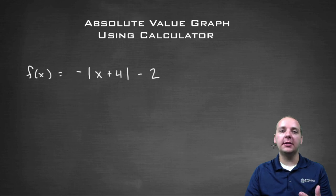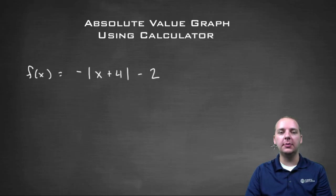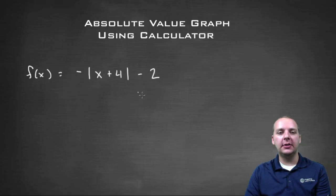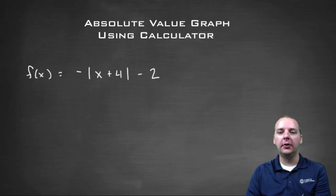A lot of students ask if it's possible to graph absolute value functions on the TI calculator, because we don't see anywhere those vertical bars that we're accustomed to seeing for absolute value. And in fact it's actually quite simple. So let's look at this example — we want to graph negative absolute value of x plus four, quantity minus two, on our calculator.